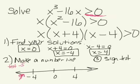Plugging x = -5 into the factored expression: we get (-5)(-5 + 4)(-5 - 4) = (-5)(-1)(-9). A negative times a negative times a negative gives us a negative result, so this region is negative.